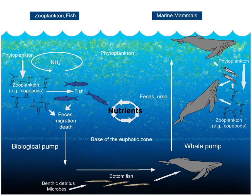In ecology and earth science, a biogeochemical cycle or substance turnover or cycling of substances is a pathway by which a chemical substance moves through biotic biosphere and abiotic lithosphere, atmosphere, and hydrosphere compartments of earth.